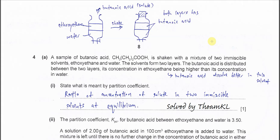Question 4a. This question is about KPC and it uses ethoxyethylene and water as solvents, and the solute is butanoic acid. Butanoic acid can dissolve in both solvents and it can distribute between these two solvents when left for a longer time. Butanoic acid has a higher concentration in the ethoxyethylene, which means the solute dissolves much better in ethoxyethylene.